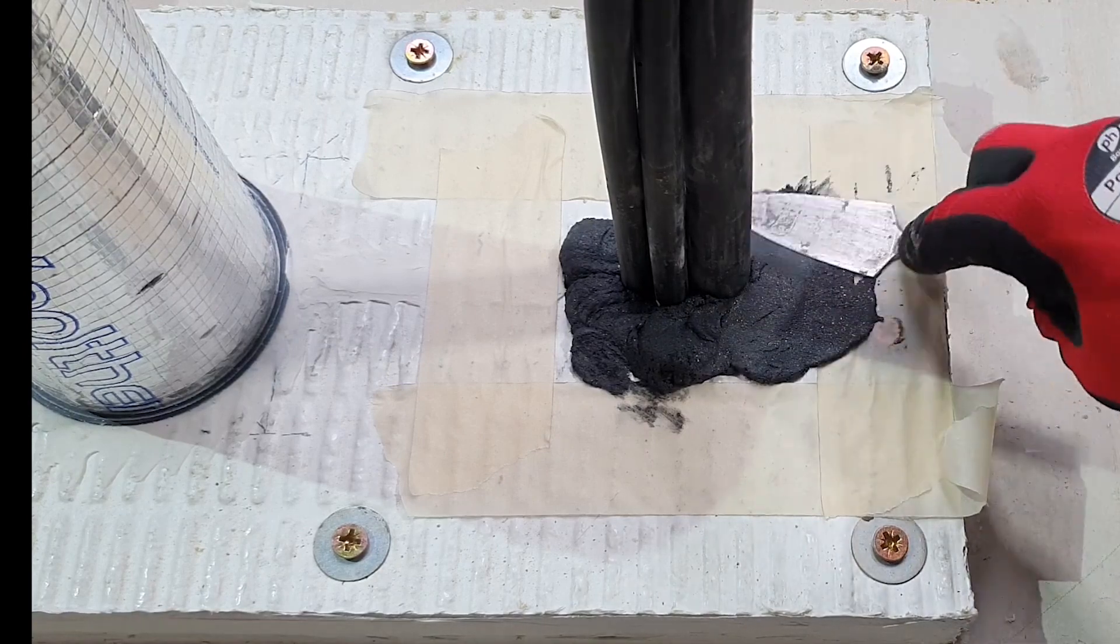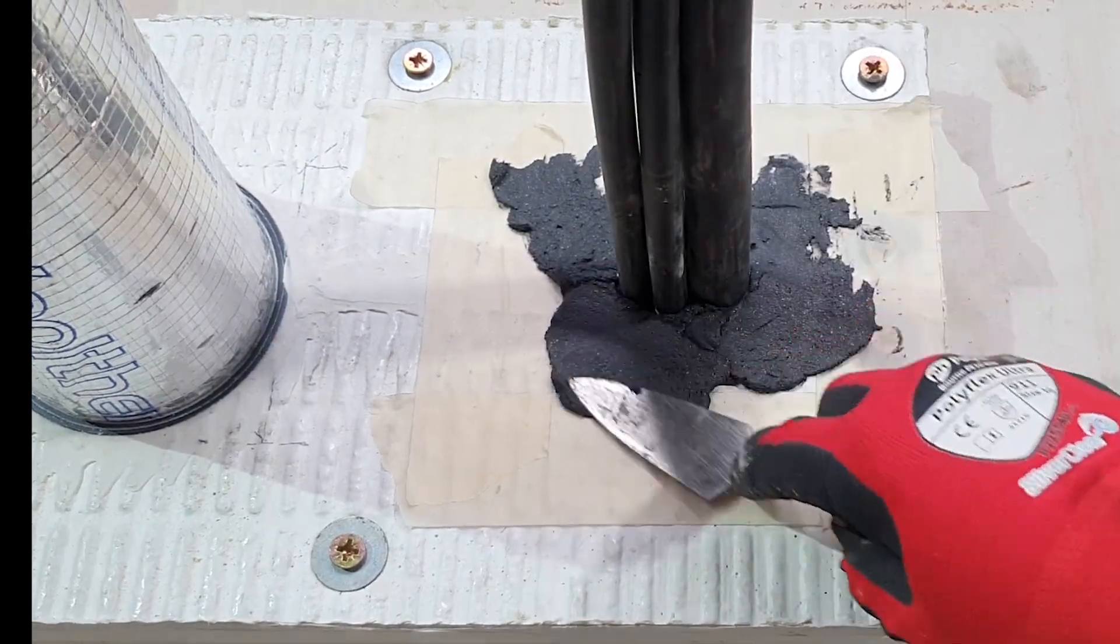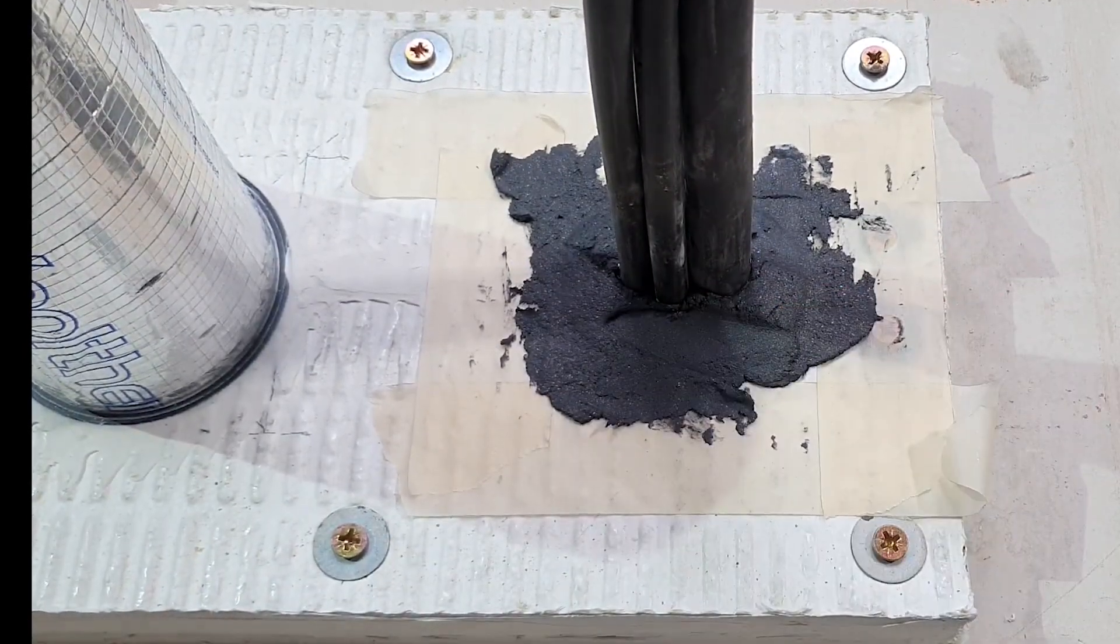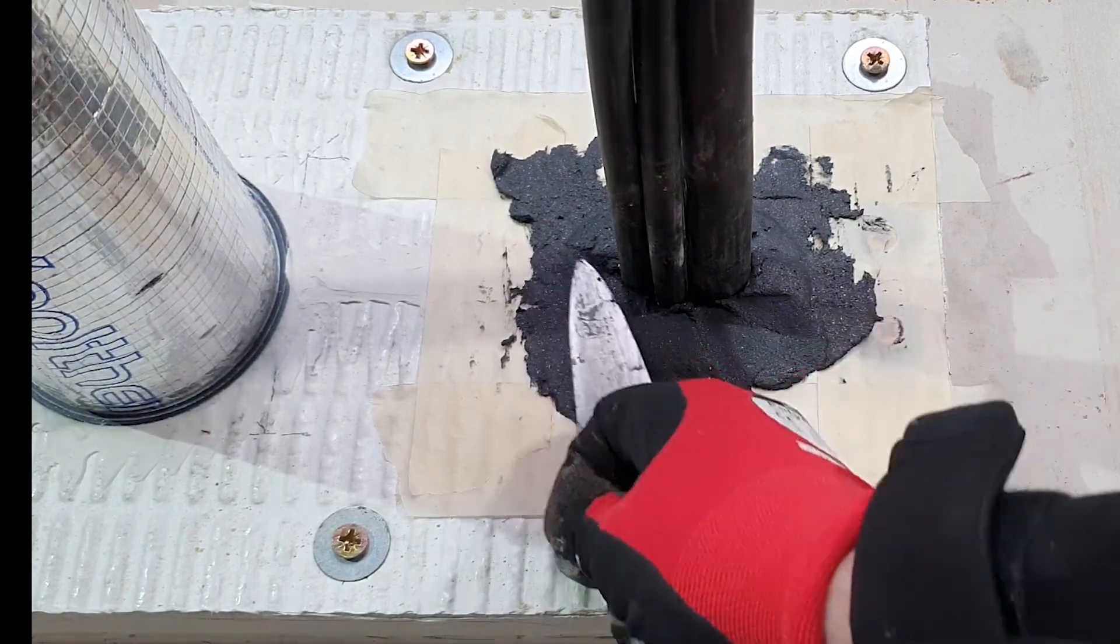A spatula is then used to smooth out and lightly compact the HPE sealant around the cables.